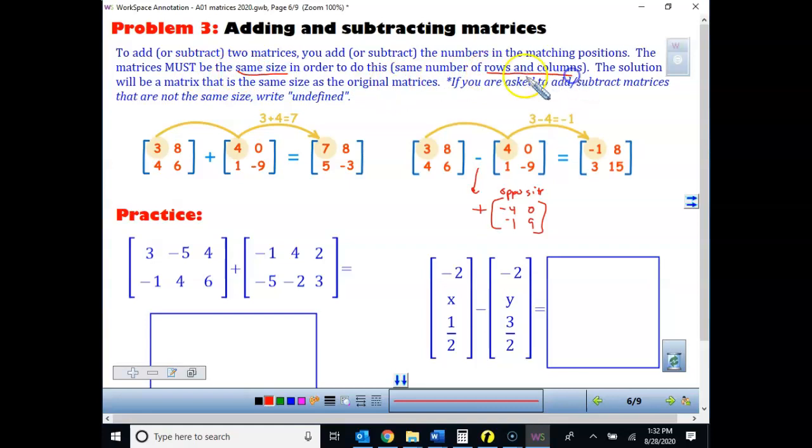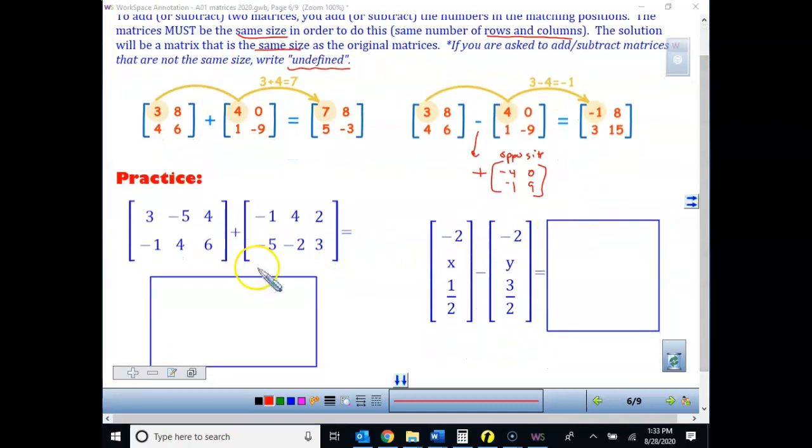The matrices must always be the same size in order to do this. They have to have the same row and column. One of the questions that we'll ask you in your homework is if you can add them. And if you can't, why? And what we say is that they're undefined. And the main reason you can never add is that they are not the same size. So the solution is always going to be the same size when you add and subtract as the original. Tomorrow in multiplication, that is not the case. So what are we doing when we add? Notice they add the places in the matrices that are exactly the same. 3 plus 4 gives us 7. 8 plus 0 is 8. 4 plus 1, 5, and so forth.